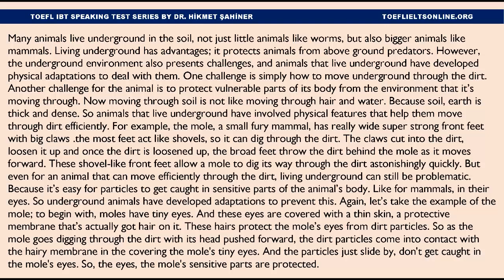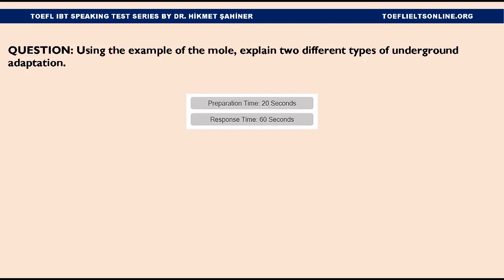But even for an animal that can move efficiently through the dirt, living underground can still be problematic, because it's easy for particles to get caught in sensitive parts of the animal's body — like, for mammals, in their eyes. So underground animals have developed adaptations to prevent this. Again, let's take the example of the mole. Moles have tiny eyes, and these eyes are covered with a thin skin — a protective membrane that has hair on it. These hairs protect the mole's eyes from dirt particles. As the mole goes digging through the dirt with its head pushed forward, the dirt particles come into contact with the hairy membrane covering the mole's tiny eyes, and the particles just slide by — they don't get caught in the mole's eyes. So the mole's sensitive eyes are protected. Using the example of the mole, explain two different types of underground adaptation.